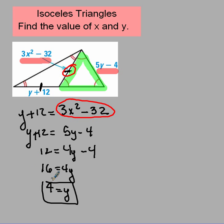Now, to figure out what x is, there's a couple of different ways I want to go ahead and do that. But what I'm going to do to find x is take y plus 12 and set that equal to the 3x squared minus 32.